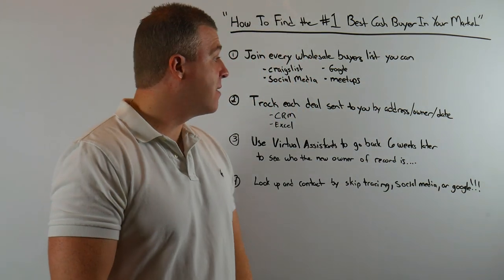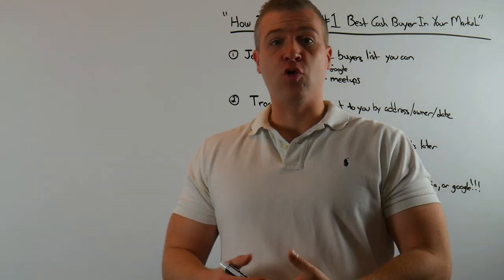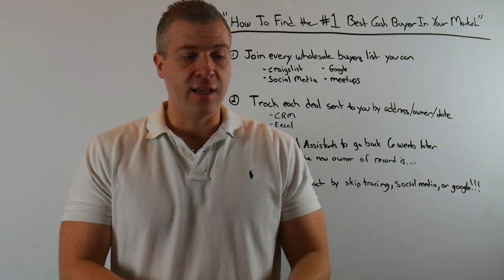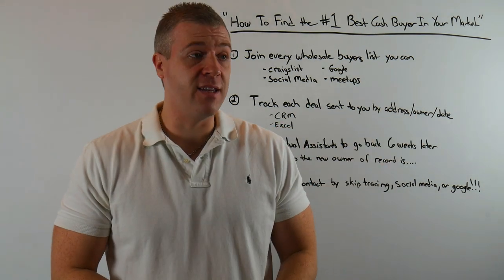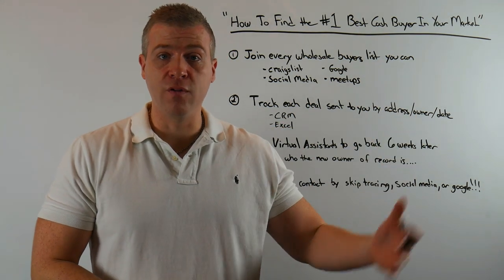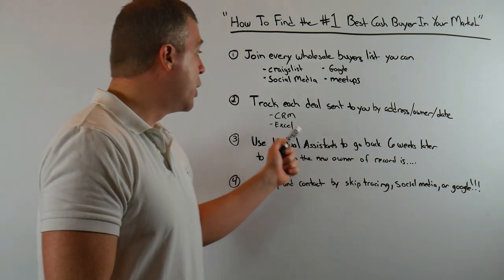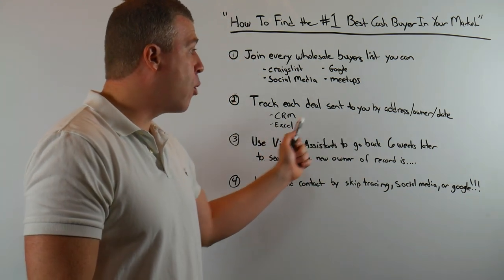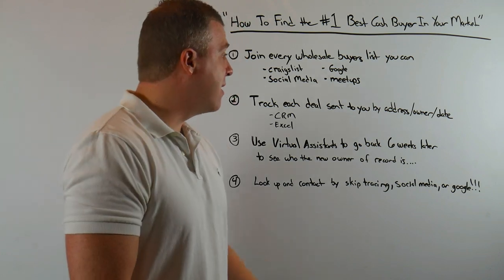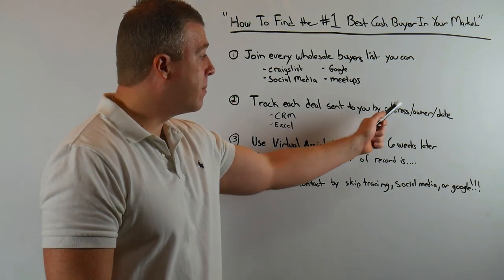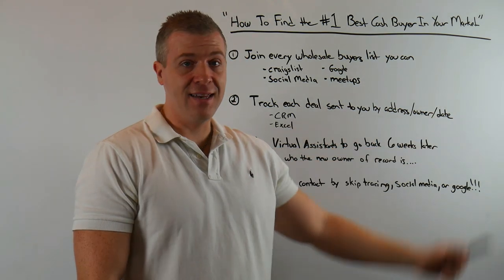The second step is you yourself, or using a virtual assistant, can track these deals as they come through. So let's say this is ABC Realty or ABC Investment Company and they're sending out wholesale deal after wholesale deal. As that deal is sent out, using a CRM or an Excel spreadsheet with a virtual assistant tracking these, when they come in, you track the address, the owner of record, and the date.